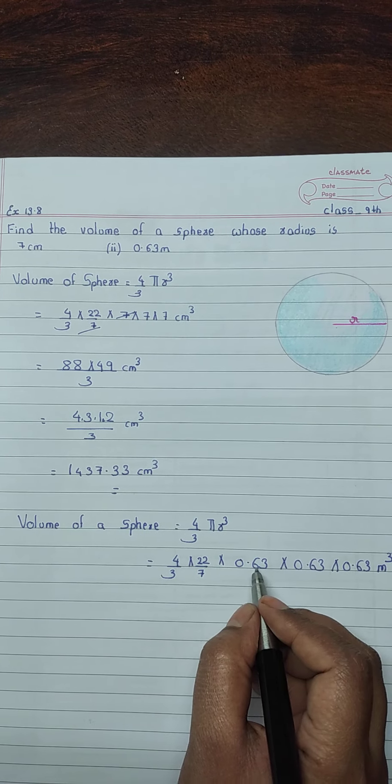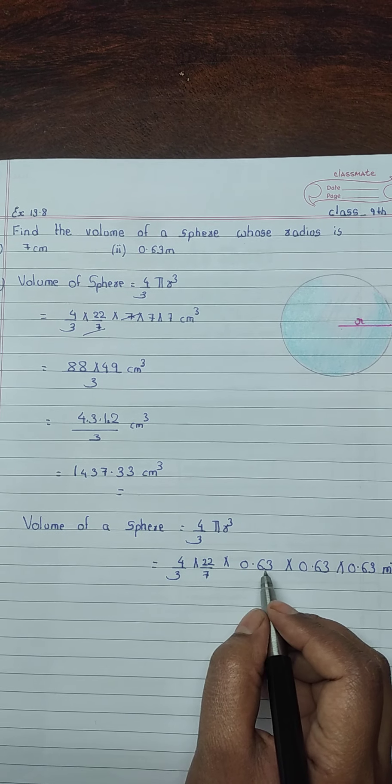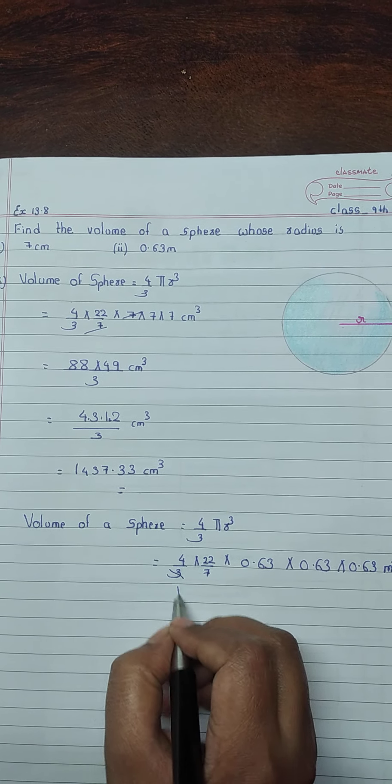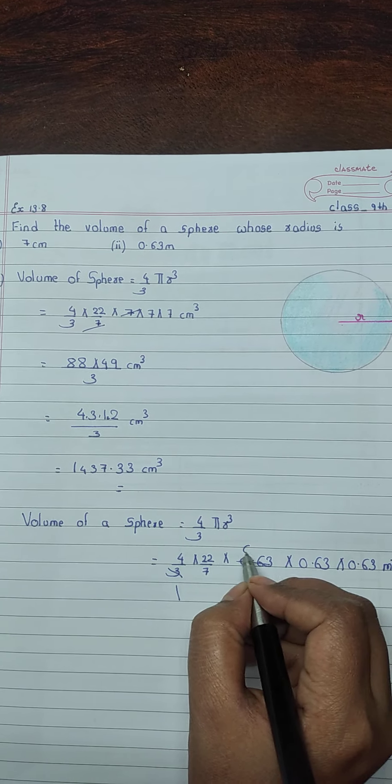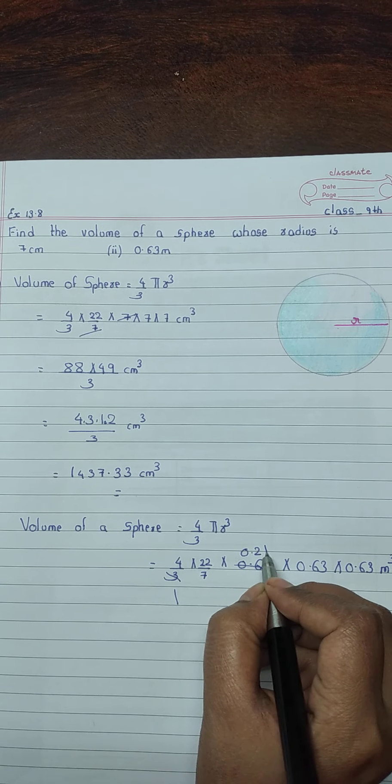6 plus 3 is 9, therefore it is divisible by 3. 3 ones are 3, 3 zeros are 0, 3 twos are 6, 3 ones are 3.